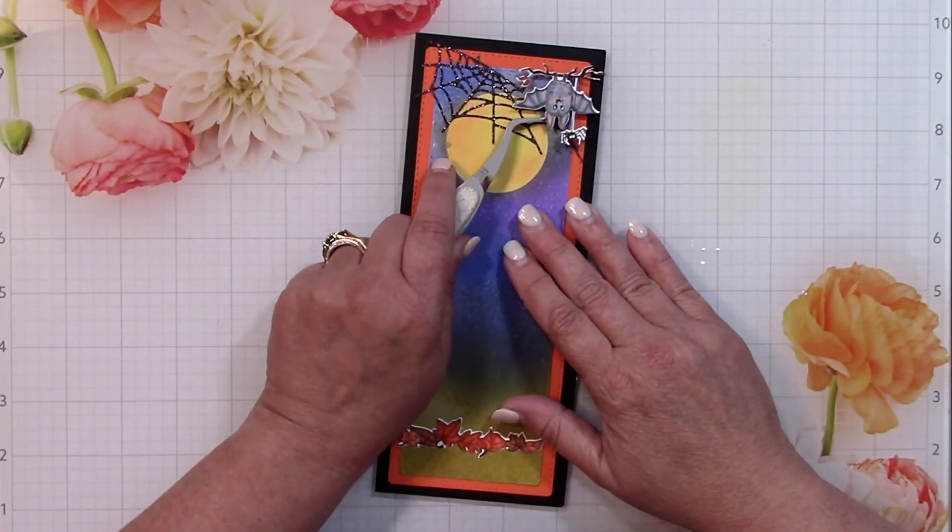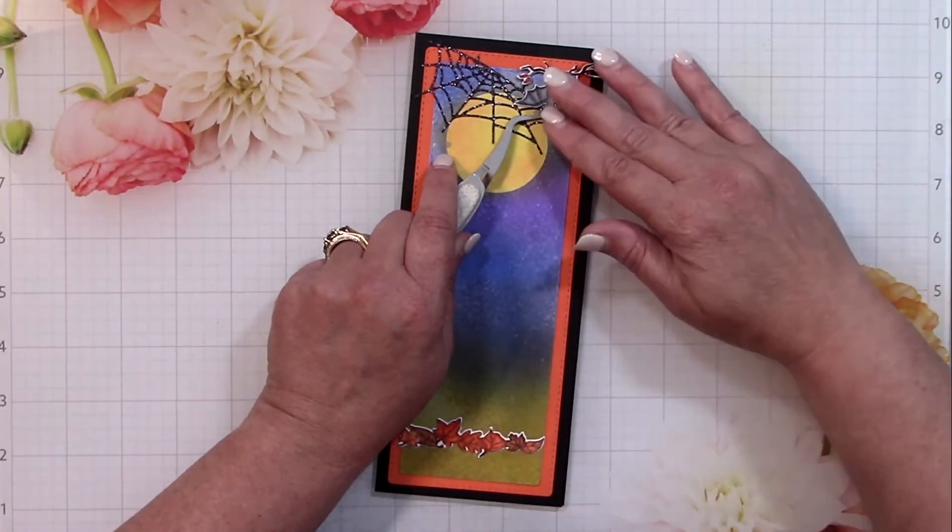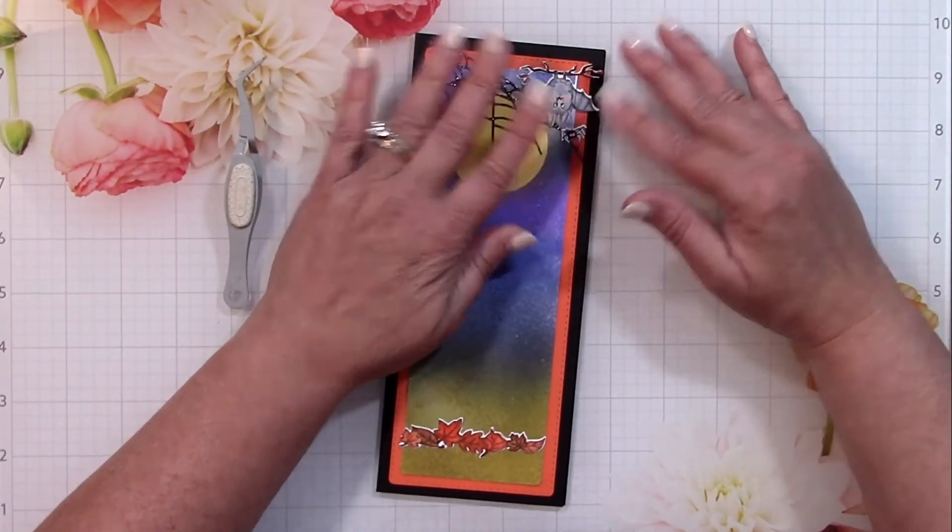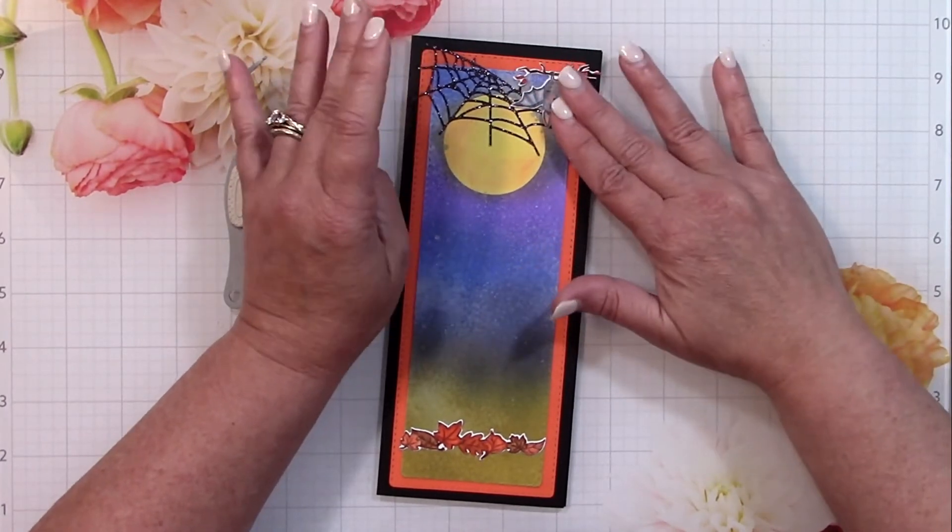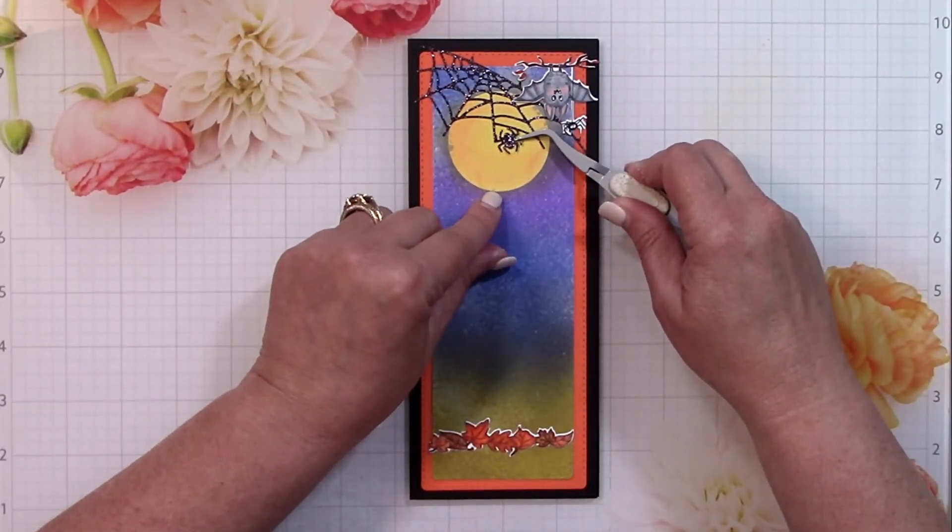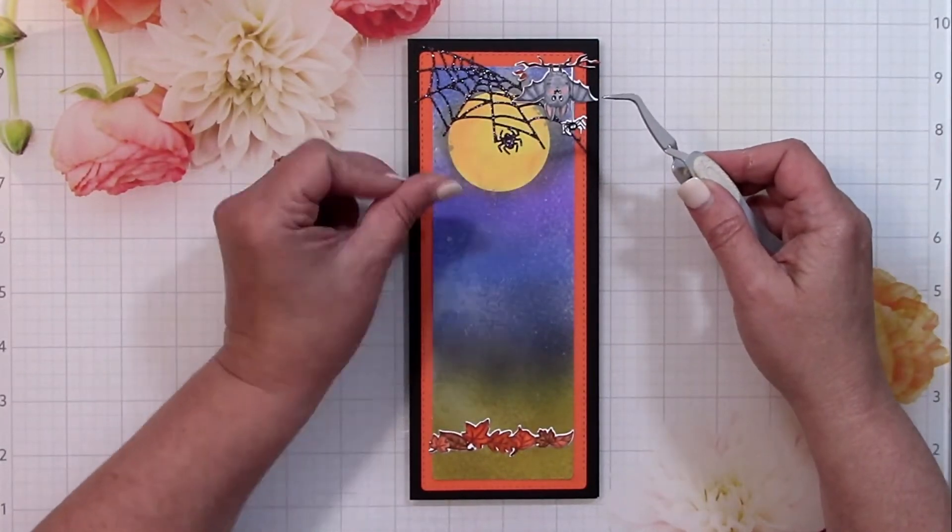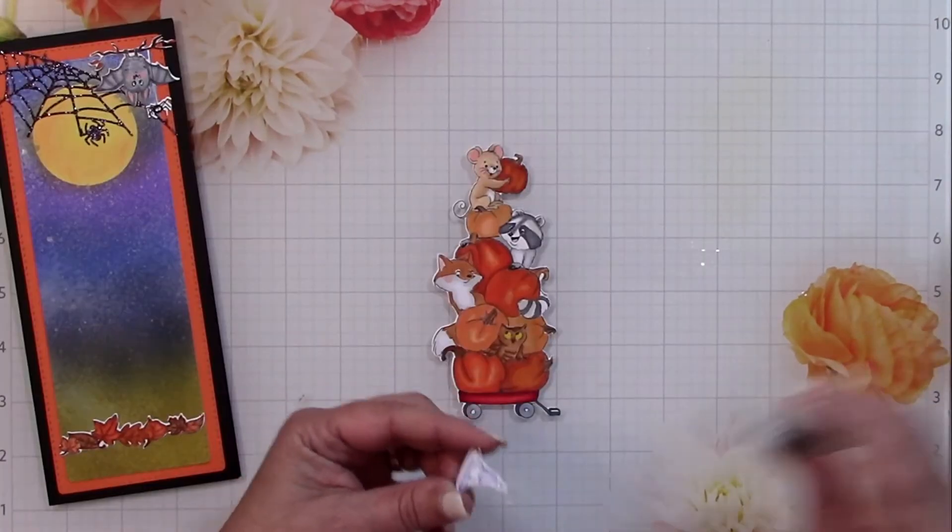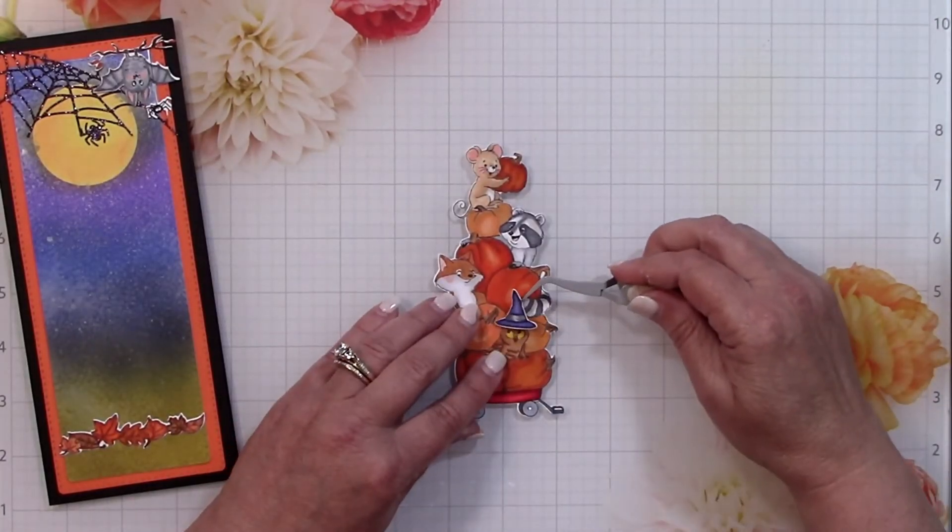Next I've got the adorable little bat hanging from a branch with his friend the spider. I love that particular image. I think I want to do a card just centering on that bat, he's so cute. I'm going to take one of the spiders that was cut out using the web die set and put that down.